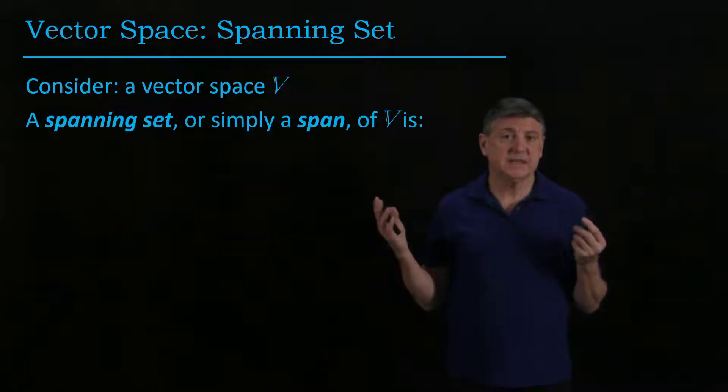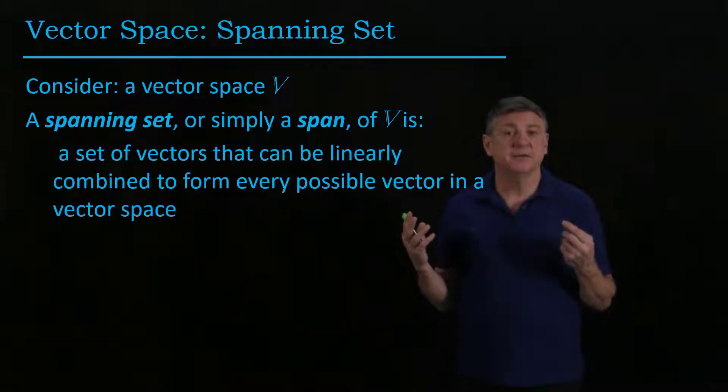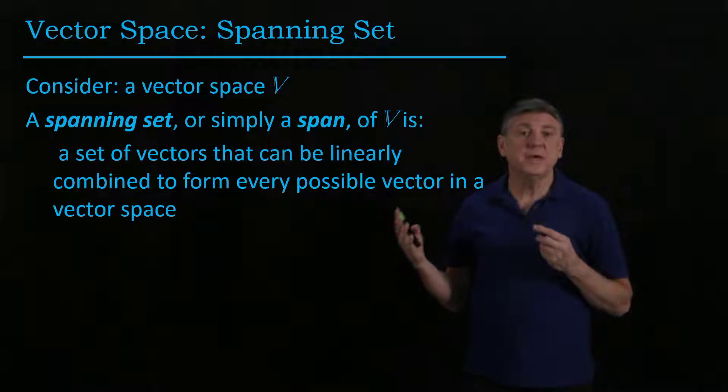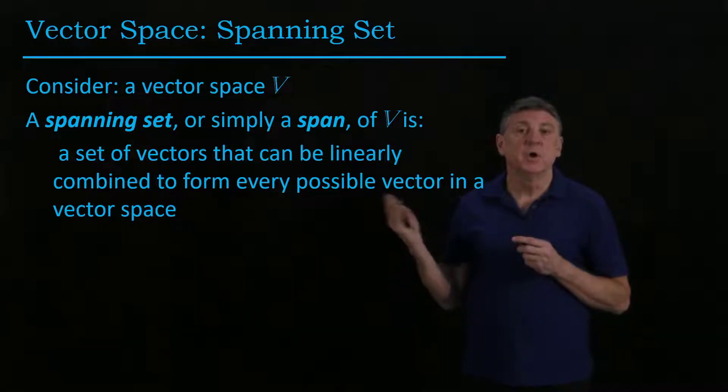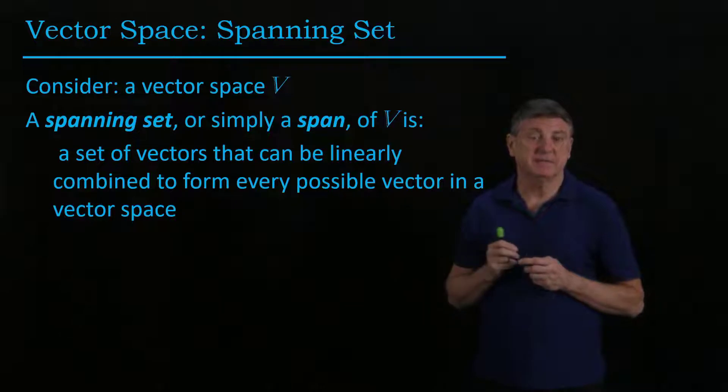A spanning set, or simply a span of the vector space, is a set of vectors that can be linearly combined to recreate or touch every vector in that vector space.